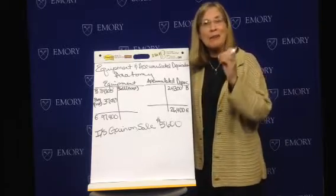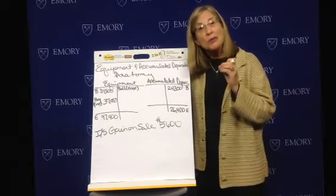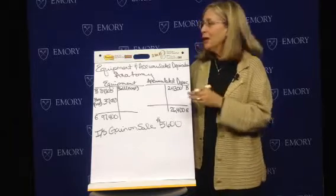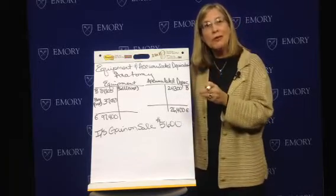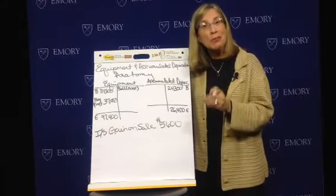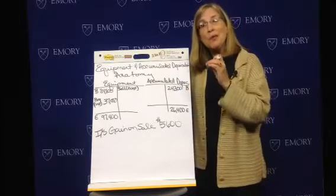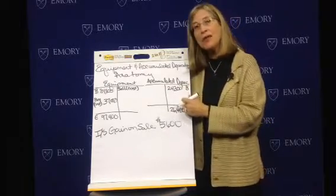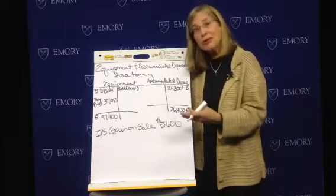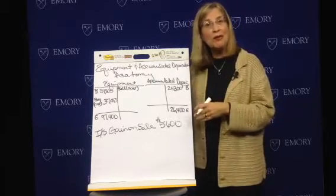We're going to talk about a particular transaction now, and we're going to reconstruct that transaction — I call it CSI accounting. We're going to figure out how much cash we got when we sold property, plant, and equipment, specifically equipment. We'll reconstruct these accounts, come up with the journal entry, and that journal entry will back us into how much cash we received, or what the selling price was.